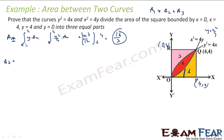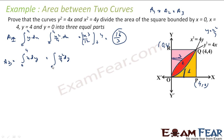Let us take A3 first because A3 is simple. A3 is the integral of x dy from 0 to 4, using the curve y² = 4x, where x = y²/4. So A3 = integral of y²/4 dy from 0 to 4 = [y³/12] from 0 to 4. We get the same answer, 16/3.